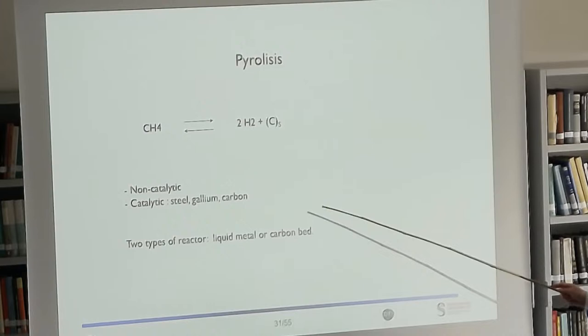So pyrolysis. Pyrolysis is this reaction. CH4 is split into two hydrogen molecules plus solid carbon. There are two kinds of processes. A non-catalytic process, where you just heat it up and it breaks. And a catalytic process, where you use some catalysts. So a lot of metals are catalytic for this process. Steel, gallium, tin. And carbon is also autocatalytic. So as a result, you can make a carbon bed. You put some carbon rods. You push the CH4 through that. And the carbon rods have new carbon deposited on them. The problem is, at some point, it clogs. So you have to remove the carbon rods, put them back in.